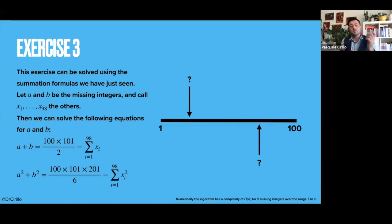So I can consider a squared plus b squared. And in this case, the sum of the squares of a and b needs to be equal to the sum of all the squares from 1 to 100, that is equal to 100 times 101 times 201 divided by 6, minus the sum of all the squares.